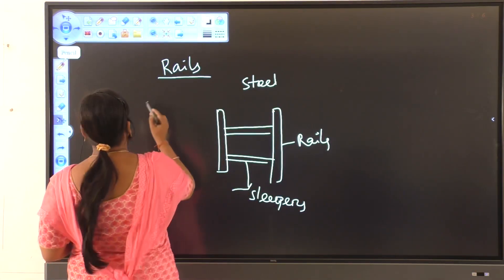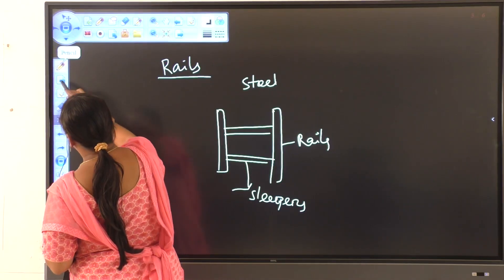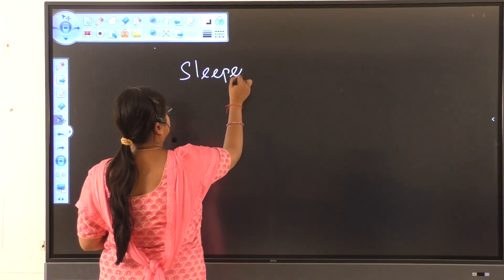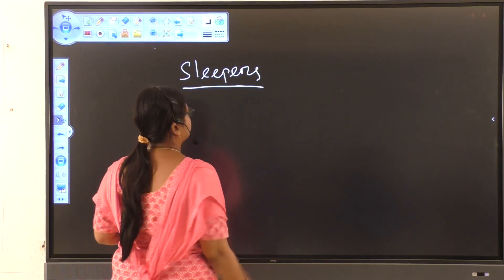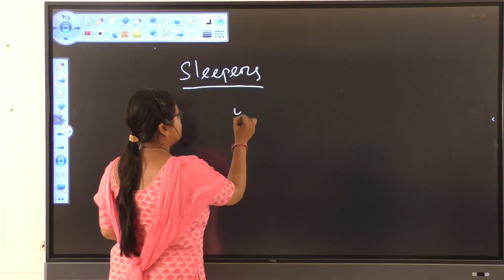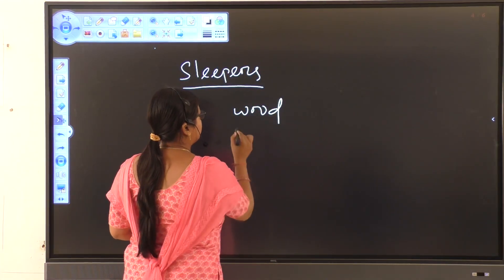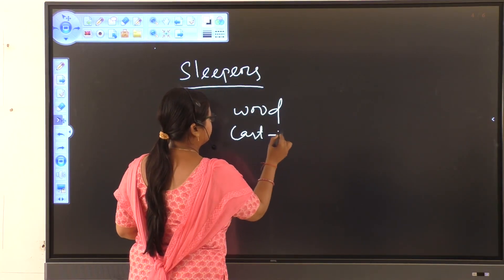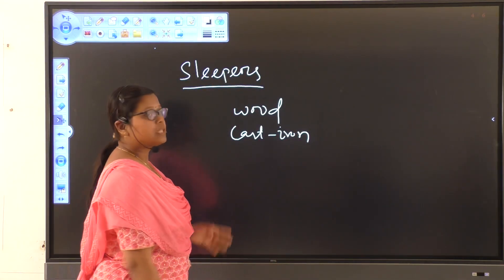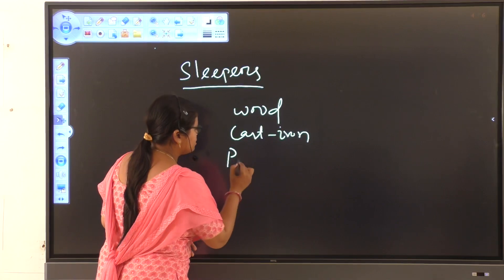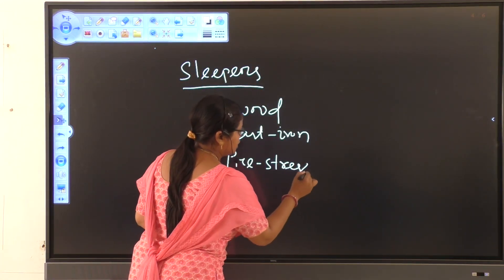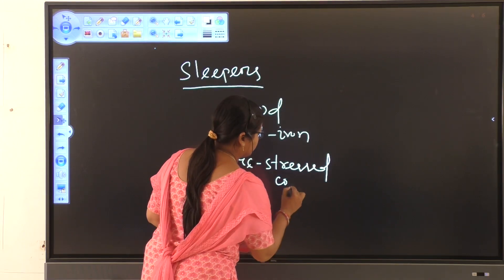Next, sleepers. Previously, sleepers are made up of wood, cast iron. But, in modern times, sleepers are made up of pre-stressed concrete.